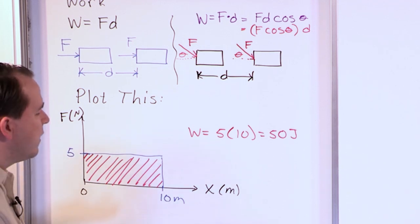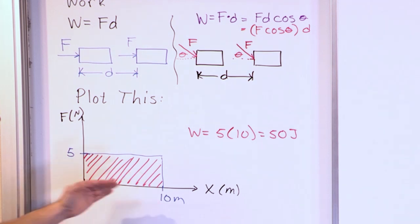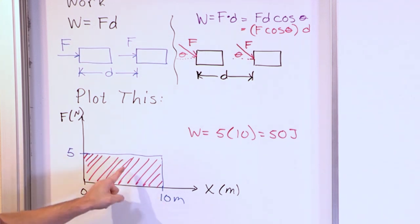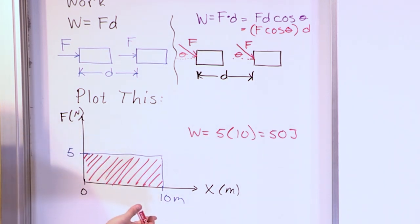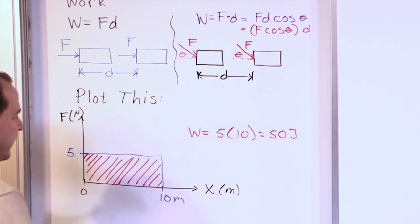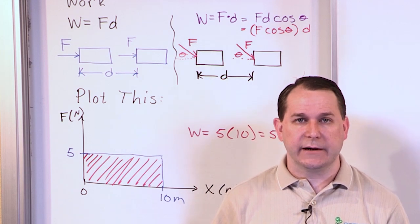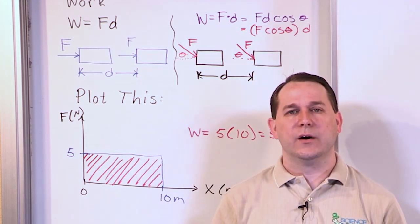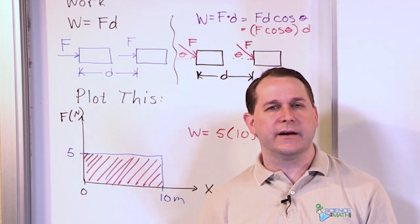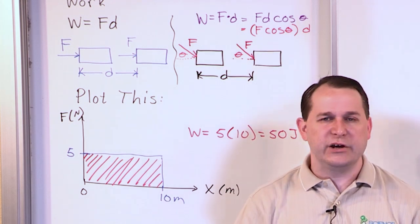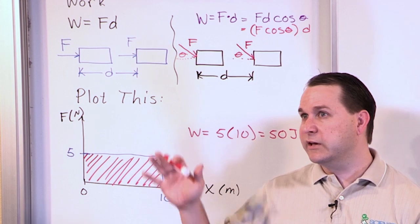So really, work is force times distance. But more generally, if you plot the force and the distance the object moves, then the work is graphically represented by the area underneath the force curve down to the x-axis between the points of motion. The area of a rectangle is length times width, so we can easily calculate and see that the area under this curve equals the work. That was easy because the force we pushed was constant in this case.